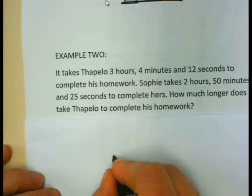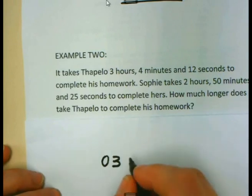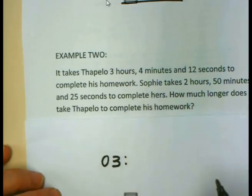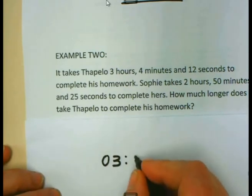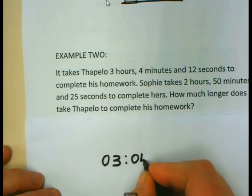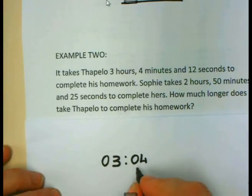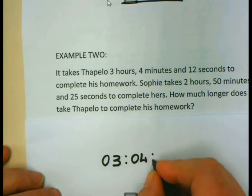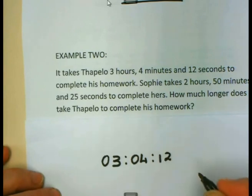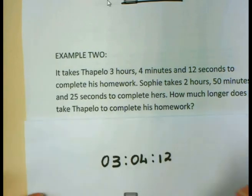We are going to first write the 3 hours. And remember we always use 2 digits when we write. So when we write the 4 minutes, we are not going to write just a 4, we are going to write 04. This 0 doesn't have any value in this case, but it will make our calculations easier. And finally, 12 seconds.